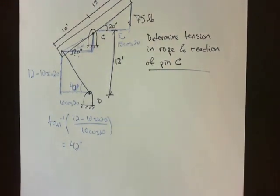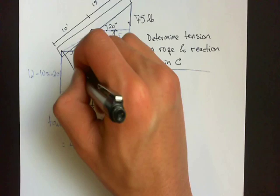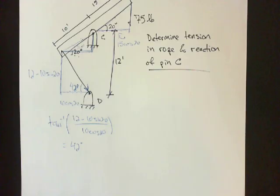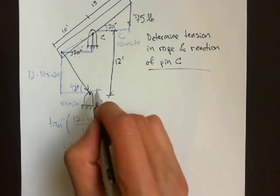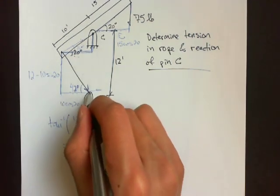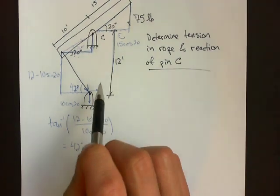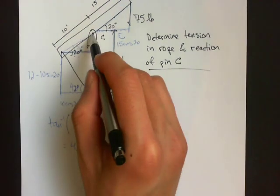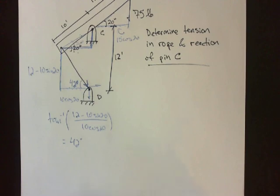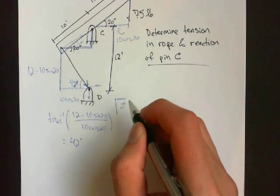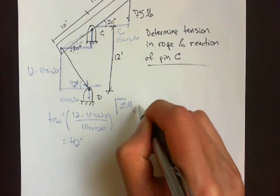Okay, now for our purposes, we will assume that the tension in this rope is going this way. So here we have its horizontal component and its vertical component. And we want to sum all of these forces about pin C. So sum of moments about pin C equals 0.